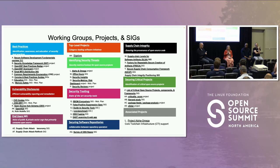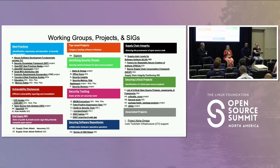Those five are centered around provenance generation and isolation strength. There are different tracks in SALSA — there is the build track, which is new in 1.0, focused on the build system. And then there is a source track as well as a provenance track.